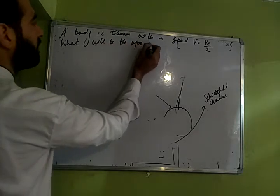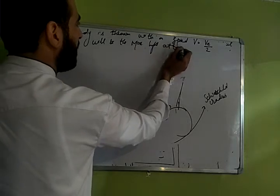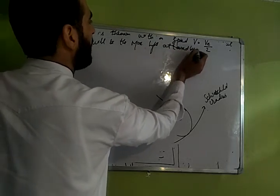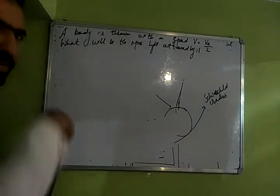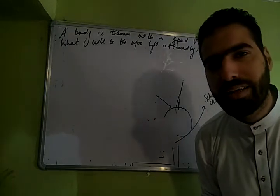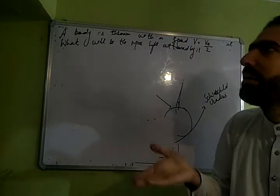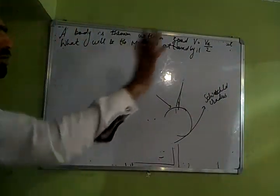Question is what will be the maximum height attained? Is that clear? Attained, see, they vertically his body ko upar phenka with speed half of the escape. Now tell me jab aapne body ko half of the escape se phenka, kya yeh body escape karegi? Nahi. Yeh kisi height tak pahunchegi aur baad me wapas aayegi. Now the question is batao kitna upar jaayega?